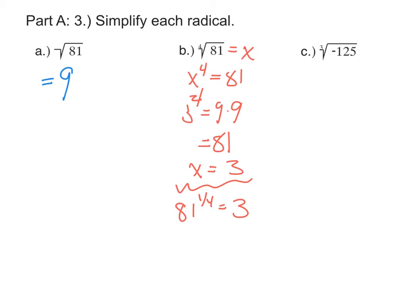However, it has an odd index. So we're looking for some value for which x to the 3rd is negative 125. And that can be negative as long as x starts out being negative.